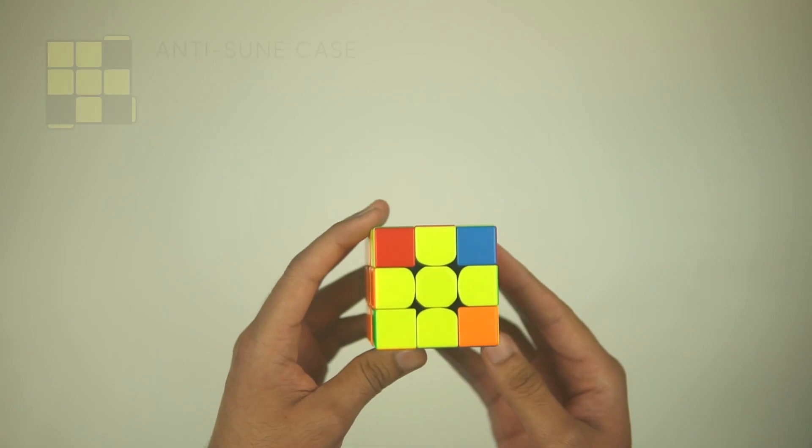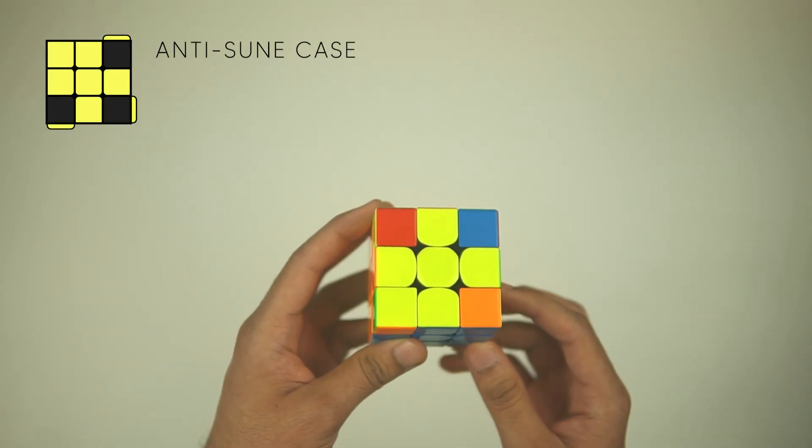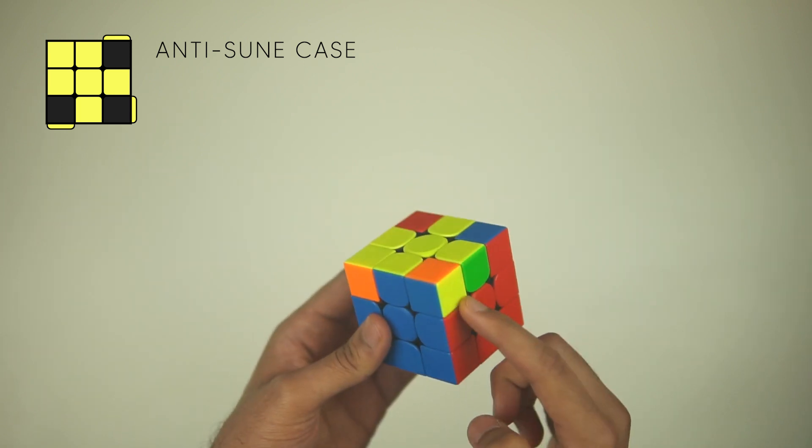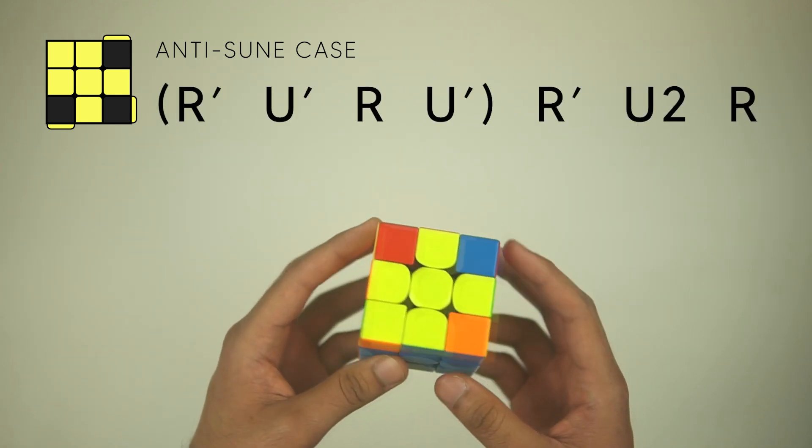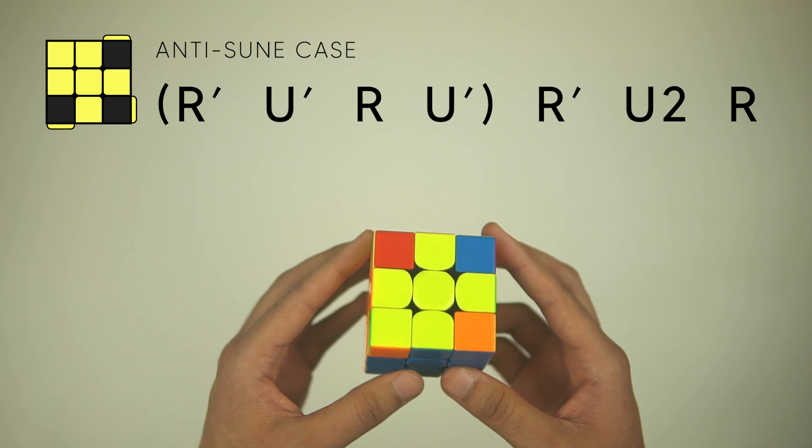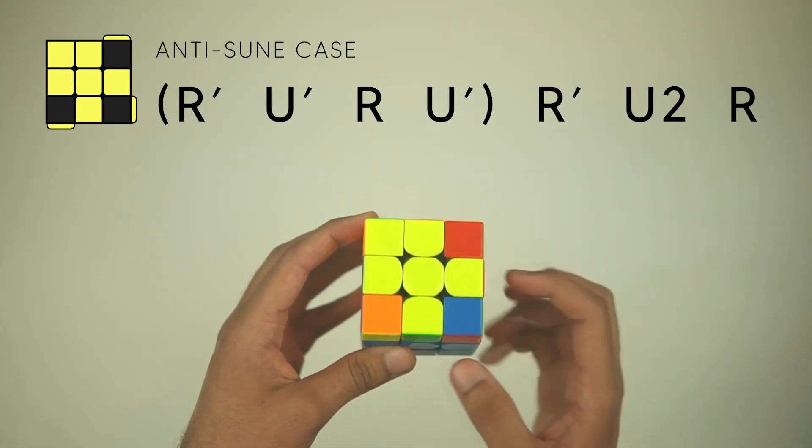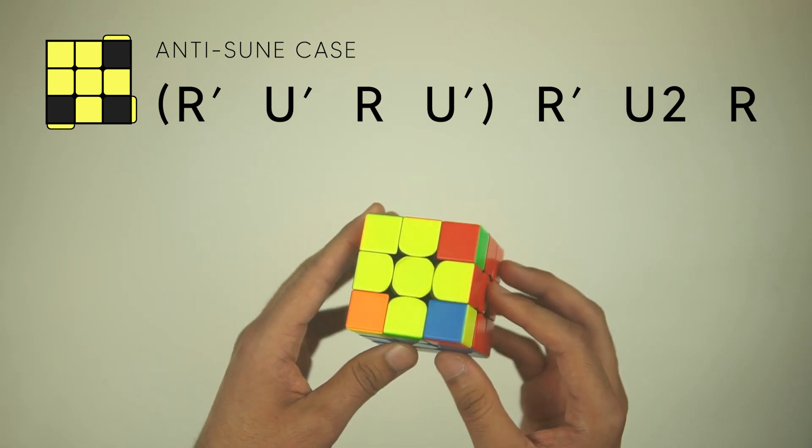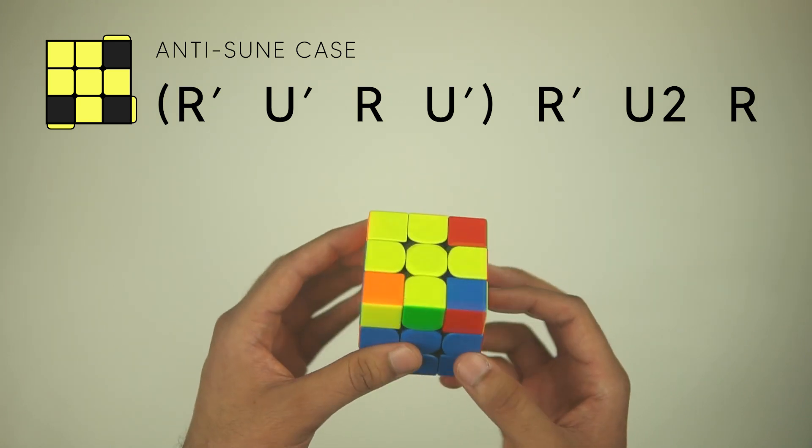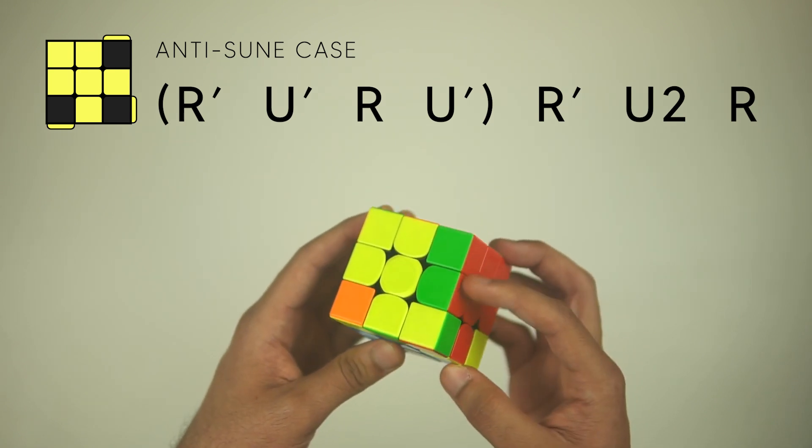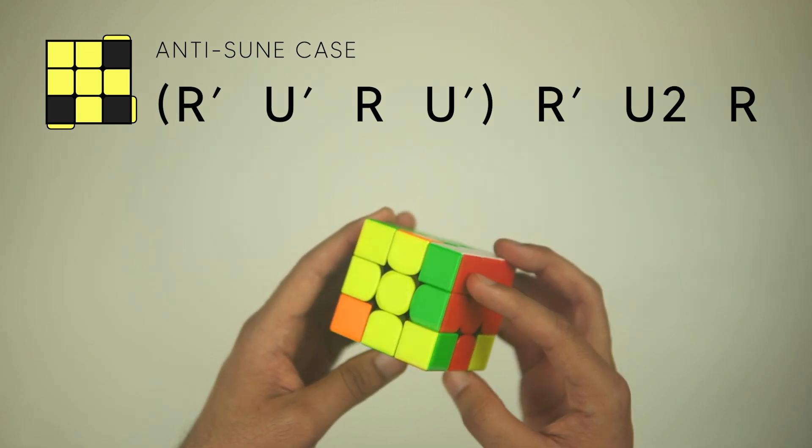Now here's the anti-Sune case where again you have the single yellow corner in the bottom left, but you don't see any yellow in the front, it's actually on the right. So this is how you recognize the anti-Sune case. And the way we're going to hold it is actually like this. We're going to hold the corner in the top left. The algorithm to solve this is going to be an R'—it's the same as a Sune but we're going to be moving this back right F2L pair out.